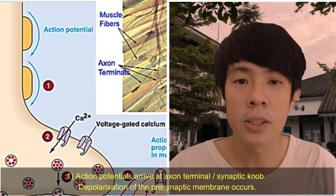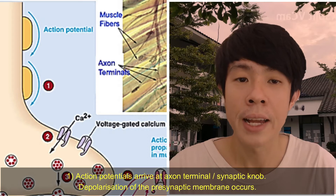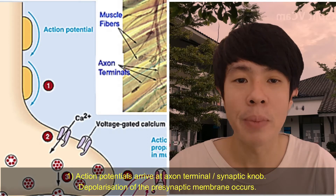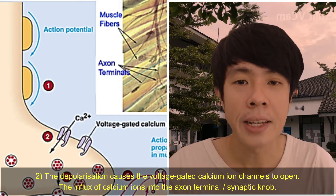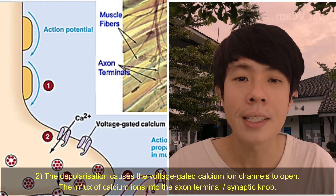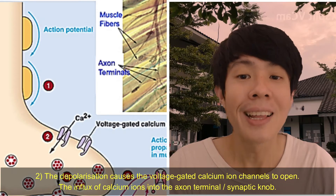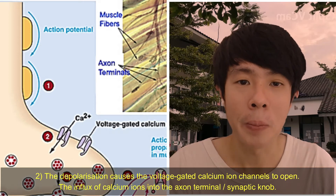Action potentials arrive at the axon terminal, or synaptic knob. Depolarization of the presynaptic membrane occurs. The depolarization causes the voltage-gated calcium ion channels to open, causing the influx of calcium ions into the axon terminal, or synaptic knob.